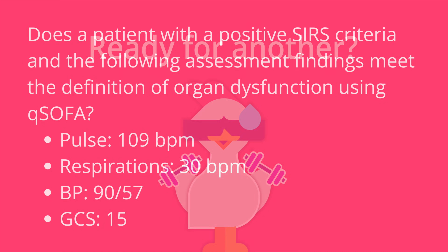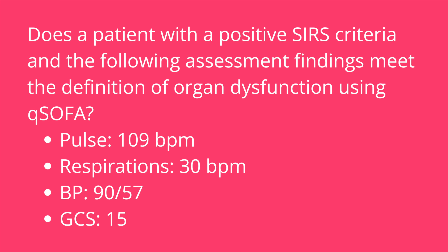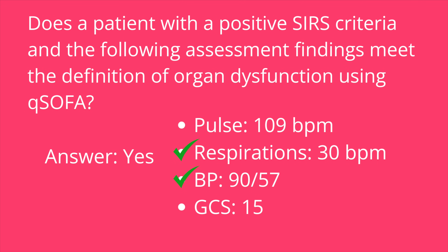Question three: does a patient with positive SIRS criteria and the following findings meet the definition of organ dysfunction using qSOFA? A pulse of 109 beats per minute, respirations of 30 breaths per minute, a blood pressure of 90 over 57, and a Glasgow Coma Scale score of 15. The answer is yes. Two or more qSOFA criteria must be met for organ dysfunction. This patient has a respiratory rate over 22 breaths per minute and a systolic blood pressure under 100.